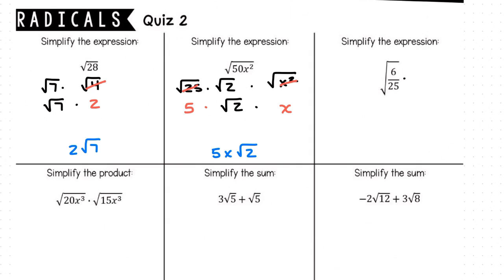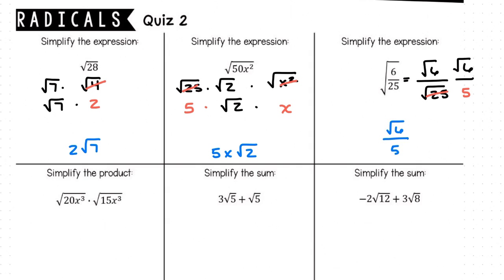In the third one, we have the square root of 6 divided by 25. Looking at the numerator and denominator separately, we have a perfect square in the denominator, which is 25. The square root of 6 cannot be simplified in the numerator. All together, we have the square root of 6 divided by 5.